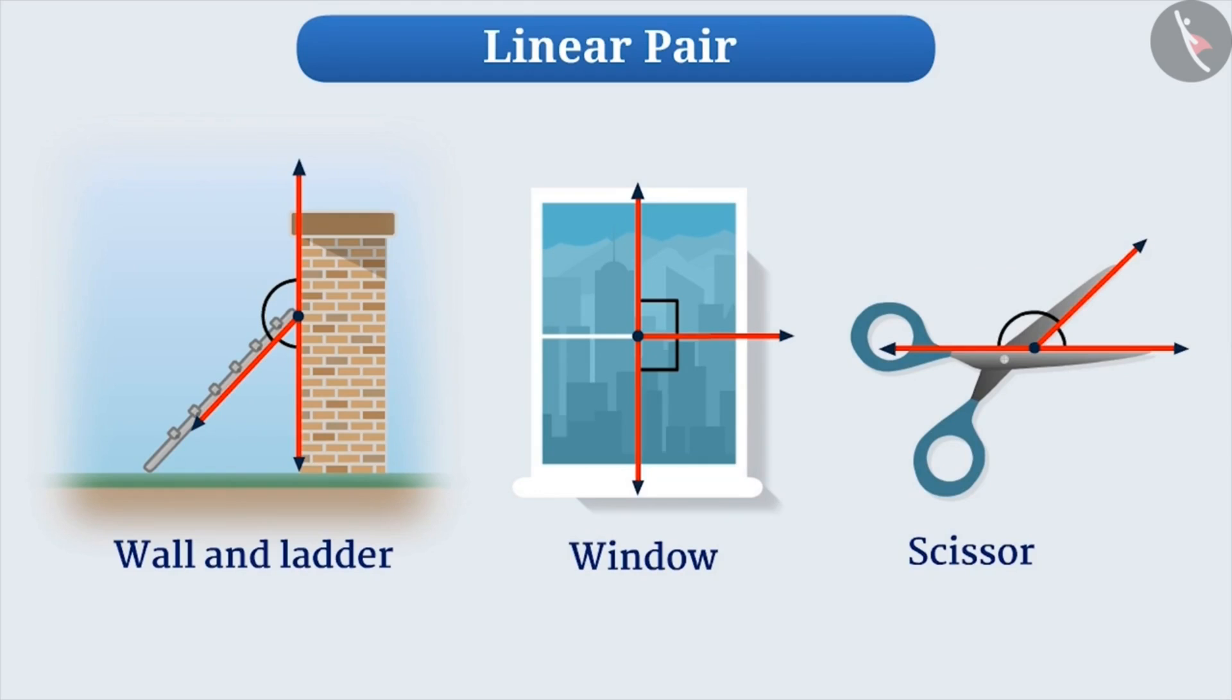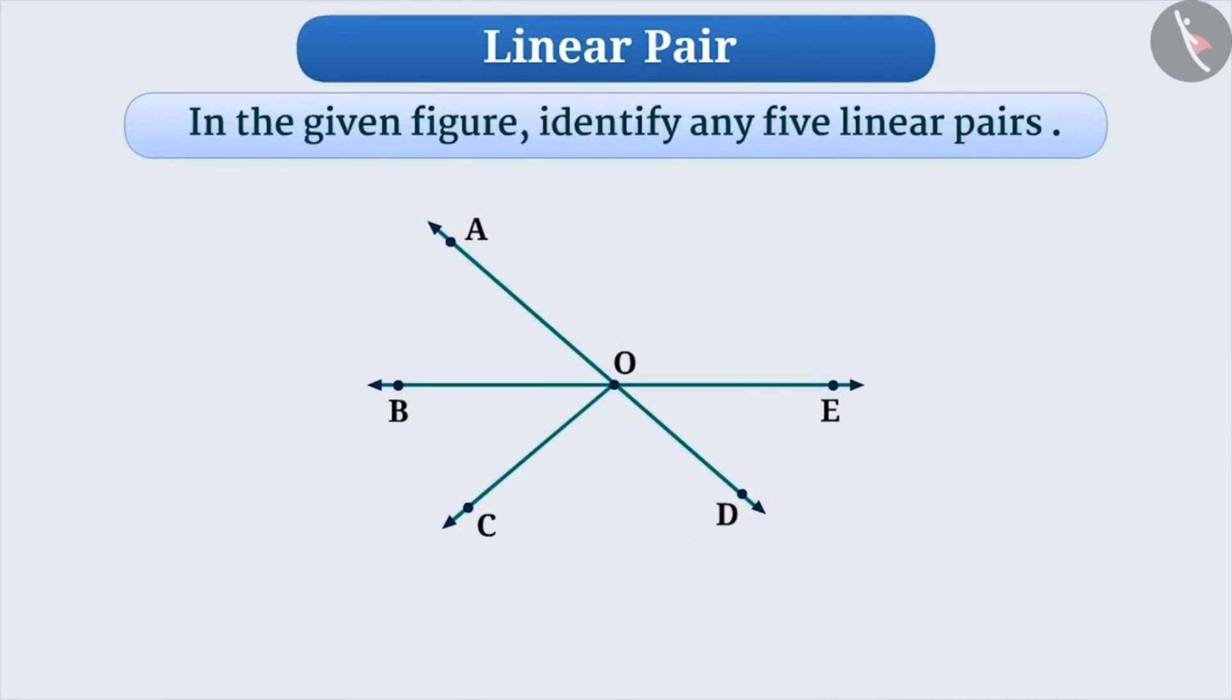Now, let's solve a question. In the given figure, identify any five linear pairs. To solve this, we will first identify the lines in the given figure. Here, AD and BE are lines.